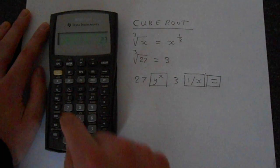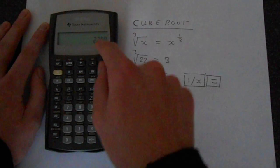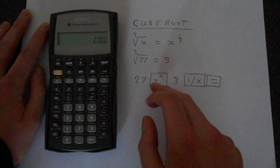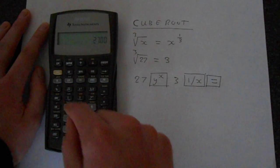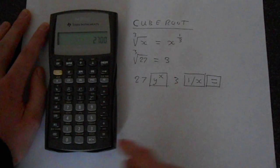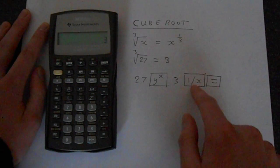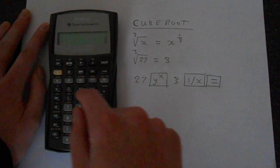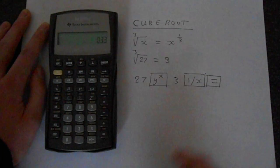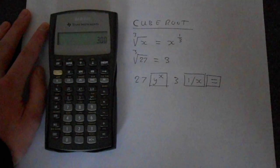So to do this we do 27 and press equals, that puts it into the memory. Then go y to the x, which is this button. Then press 3 and then 1 over x. So 1 over x is here, and then press equals and it gets 3.